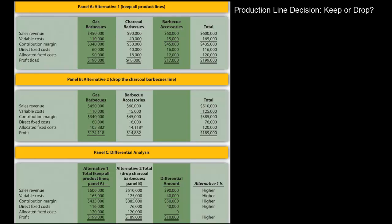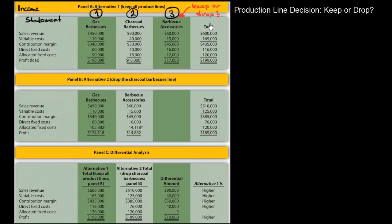I have found a nice example from managerial accounting about the production line decision: keep or drop. This is our company's income statement — let's focus on panel A. We have three production lines, and the question is about production line number three: should we keep it or drop it? Our boss would like to see hard numbers to make the right decision, so we are going to do some calculations.